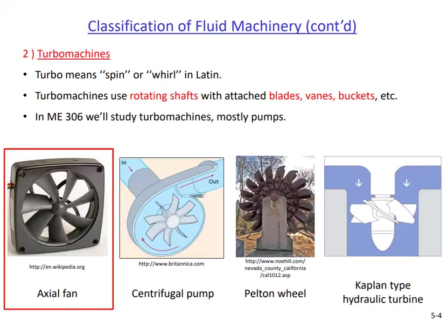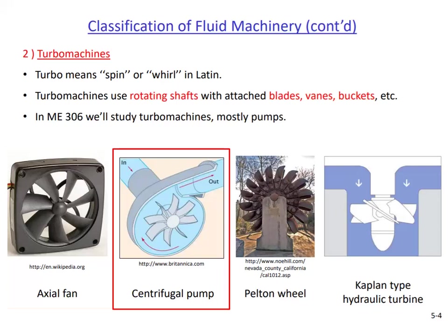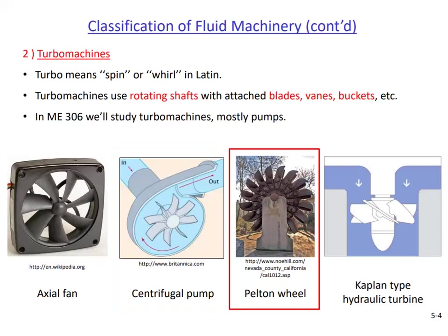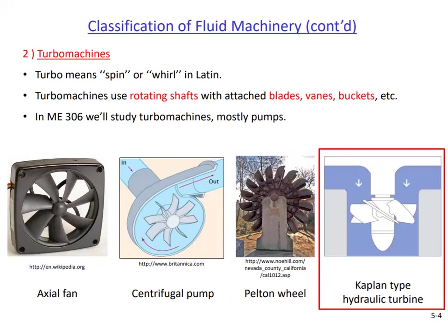You see four different turbo machines in this slide. The first is a cooling fan used in electronic devices such as computers, pushing air to cool heat-generating components. The second is a pump used to pressurize liquids to move them inside pipes at a desired flow rate. Next is a Pelton wheel, a hydraulic turbine that uses stored energy in fluid to generate electricity, and the last is a Kaplan turbine, another type of hydraulic turbine.